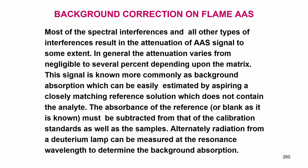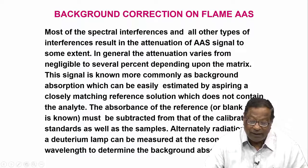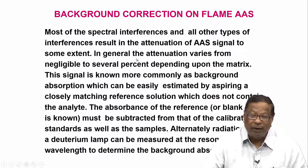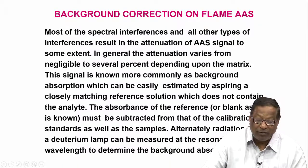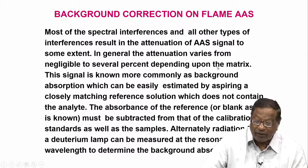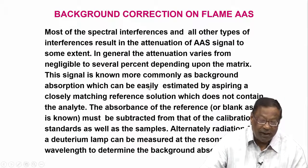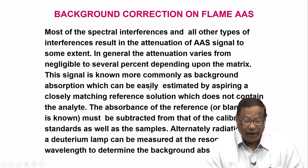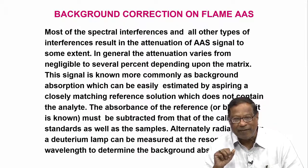In general, attenuation means reduction in the signal. This reduction in the signal varies from negligible levels to several percent — maybe 5 percent, 10 percent — and sometimes you may not even get a signal. It all depends upon the matrix elements. This signal is more commonly known as background absorption, which can be easily estimated by aspirating a closely matching reference solution that does not contain the analyte.